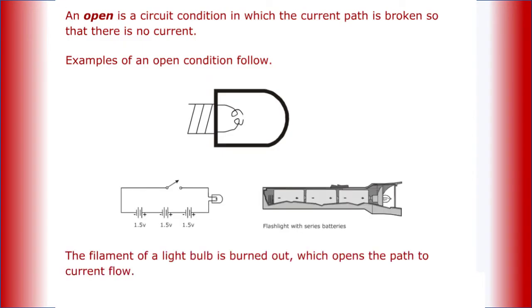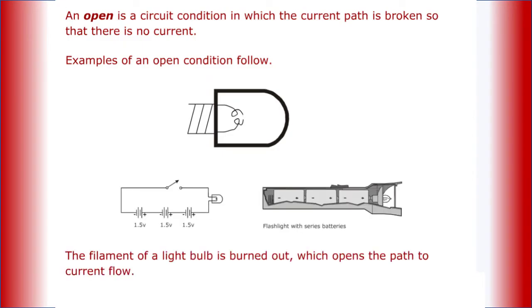An open is a circuit condition in which the current path is broken, so there is no current. Examples of an open condition follow.